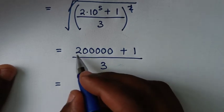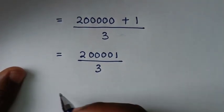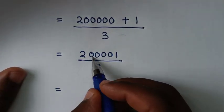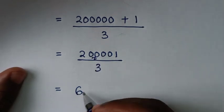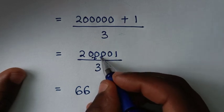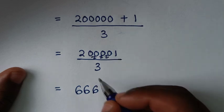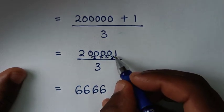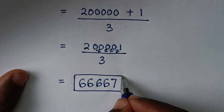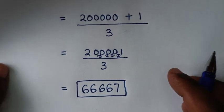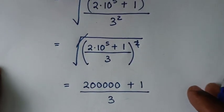So it will equal 200001 divided by 3. Dividing: 20 divided by 3 is 6 remainder 2, bringing down gives 21 divided by 3 is 7, so the final answer is 66667. Thank you. Don't forget to subscribe to my channel — see you in the next video, bye bye.